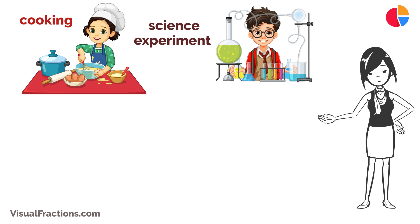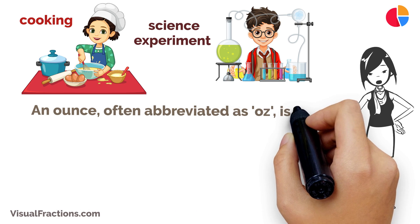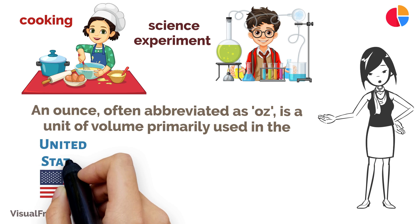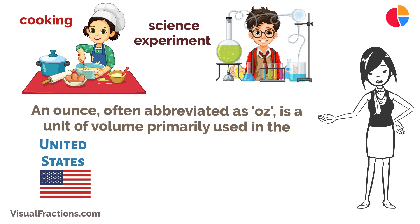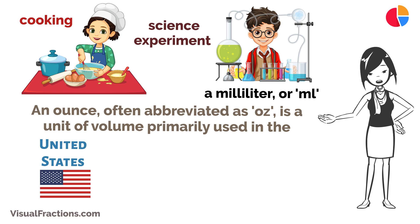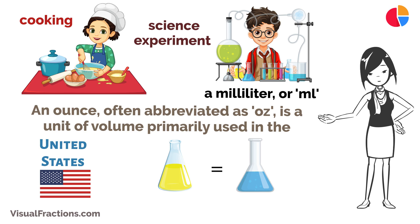First, let's understand our units. An ounce, often abbreviated as oz, is a unit of volume primarily used in the United States. On the other side, a milliliter, or ml, is a metric unit of volume used almost universally in science and in most countries.